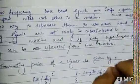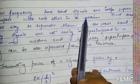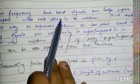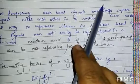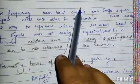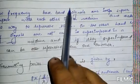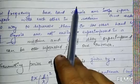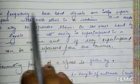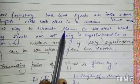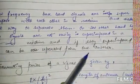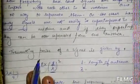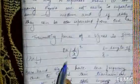The second reason we need modulation is the mixing of signals. Low-frequency baseband signals are easily superimposed on each other in a medium and there is no way to separate them — just like when you watch TV and other channels interfere. On the other hand, high-frequency signals are not easily superimposed, and if they do superimpose, they can be separated from one another.